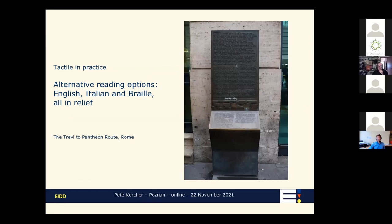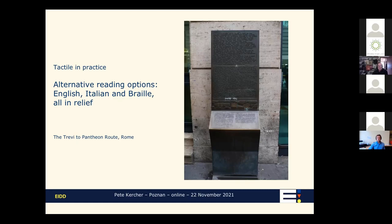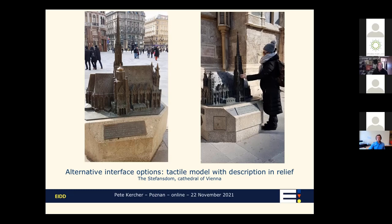We can also do things like tactile alternatives. This one in Italian, English, and Braille — all in relief with a little map — is the route from the Trevi to the Pantheon in the center of Rome. Not everybody can read Braille; blind people can't always read Braille, and in any case it's only in one language at a time. That's why it's recommended to also provide alternative reading options. We also suggest using tactile models with descriptions in relief. This is the Stephansdom, the cathedral in Vienna. These bronze models are really quite expensive. We can also use technology in historical venues — this is the Ludovisi cloister in the Baths of Diocletian in Rome.